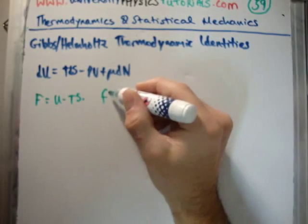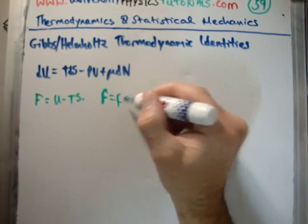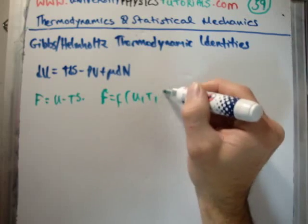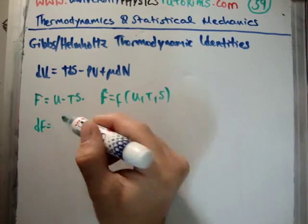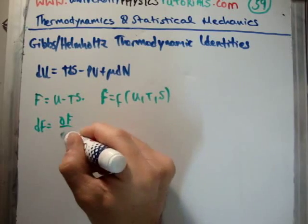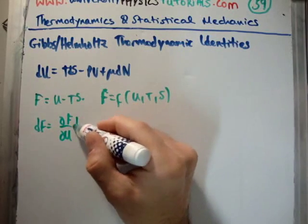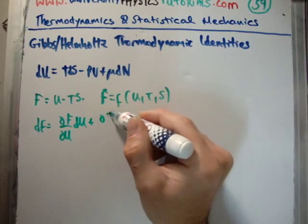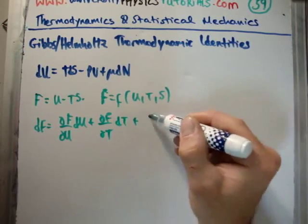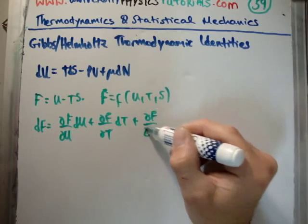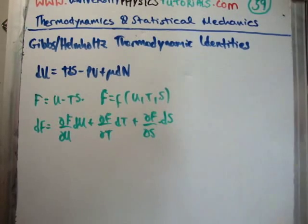Similarly, say F is a function of U, T, and S. Okay, so that means that dF is equal to (∂F/∂U)dU plus (∂F/∂T)dT plus (∂F/∂S)dS. Okay, so the derivatives are pretty straightforward.